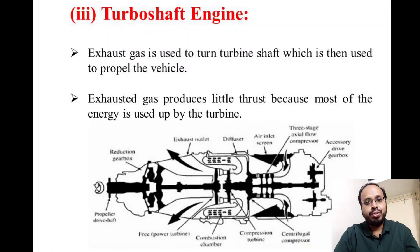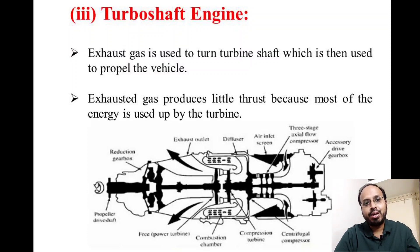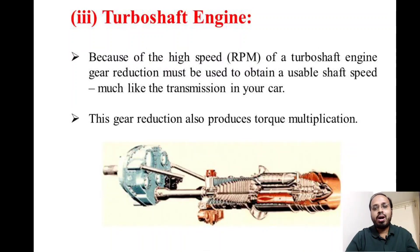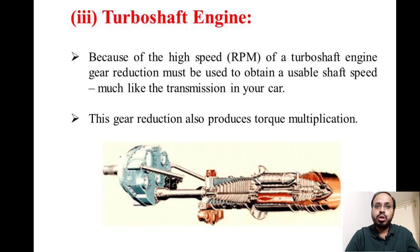The turboshaft engine uses exhaust gases to turn a turbine shaft, which is then used to propel the vehicle. The exhausted gas produces little thrust because most of the energy is used up by the turbine. Due to the high speed of the turboshaft engine, gear reduction must be used to obtain a usable shaft speed — much like a transmission in a car — and this gear reduction also produces torque multiplication, which is very advantageous.